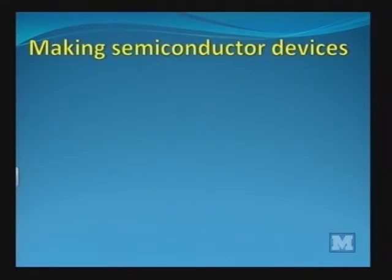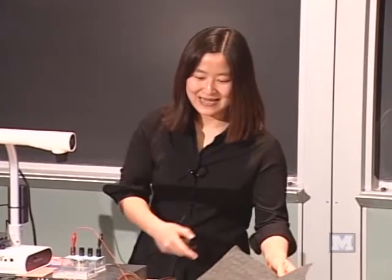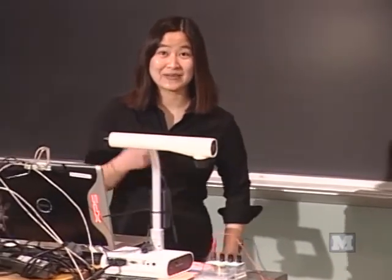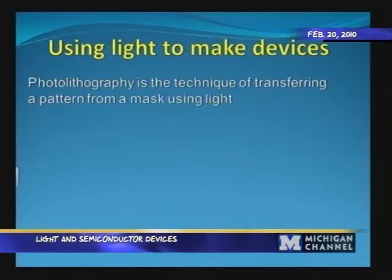That brings us to the question of making semiconductor devices. If I have a semiconductor, how do I go about applying wires to it so I can collect the current or apply the voltage? What about something more complex like a computer with billions of transistors, or megapixel cameras with millions of devices? How do we define individual pixels? There must be some efficient way to make all of these devices together at once and in parallel. It turns out that light also plays a role in the making of these devices — we use the technique of photolithography in order to transfer patterns onto a semiconductor chip, and that's done using light.